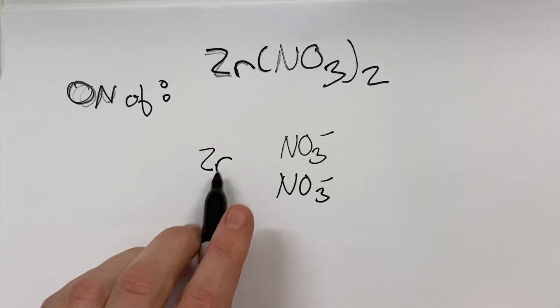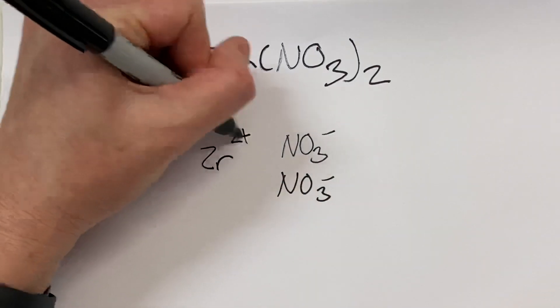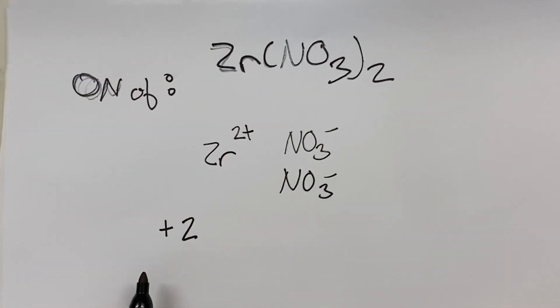Then we have zirconium. So the question is, what must the charge of zirconium be to cancel out these two negatives? Well, it must be 2 positive. So its oxidation number right off the bat is going to be positive 2, following the oxidation rules.